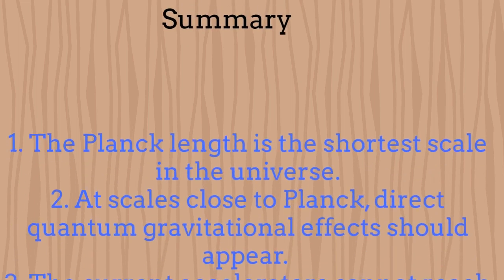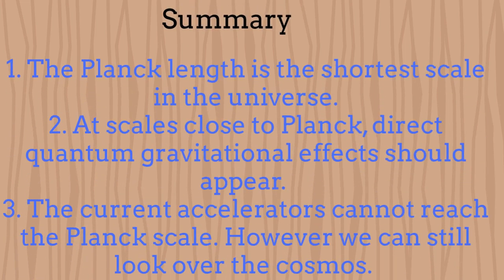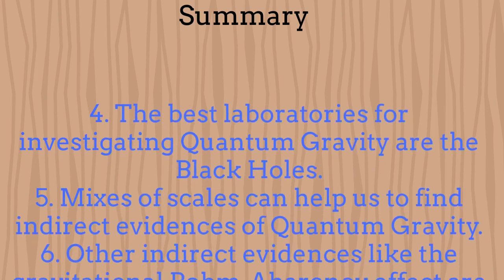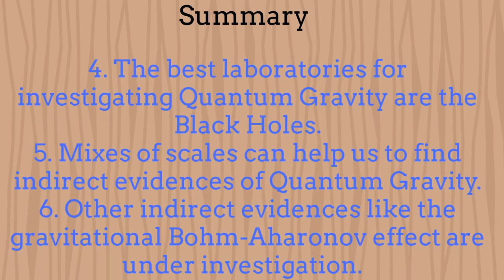In summary, the Planck scale is the shortest possible scale in the universe. At the scales near the Planck length, direct evidences of quantum gravity should appear. With our current accelerators, we cannot reach scales as short as the Planck length. However, we can still look at some evidences of quantum gravity by looking at the cosmos. The best laboratories for investigating quantum gravity are the black holes. Inside the physics of the black holes, together with expressions like the generalized uncertainty principle and others, it is possible to get physical macroscopic scales where indirect quantum gravitational effects might appear. Finally, other indirect evidences of quantum gravity can be obtained by analyzing some physical aspects, like the Aharonov-Bohm effect, but applied to gravity.